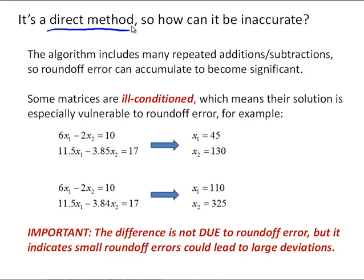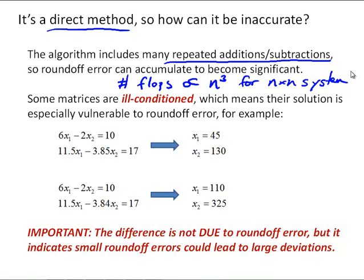For one, the algorithm includes many repeated additions and subtractions, and so roundoff error can accumulate as we keep adding and subtracting the same numbers. Recall that the number of operations is proportional to n cubed for an n by n system. So potentially, say a 100 by 100 system, we could be talking about 10,000 operations. So those roundoff errors that are on the order of 10 to the minus 16 can accumulate and become significant.